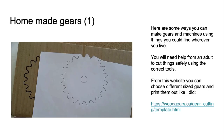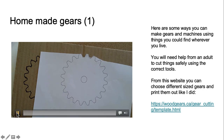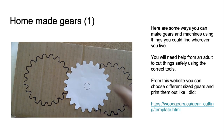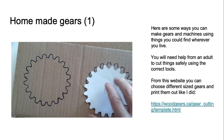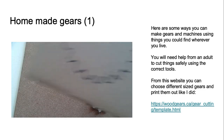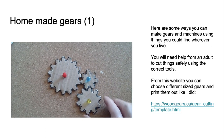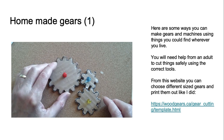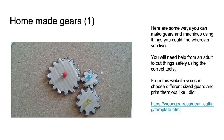Homemade gears number one. Here are some ways you can make gears and machines using things you could find wherever you live — you will need help from an adult to cut things safely. From a website you can choose different size gears and print them out, cut them out carefully, trace them onto thicker card, and cut the card out to make gears of different sizes. Pin them to a cork board and if you're really careful you can see them turn just like on a plastic gear kit. That's a great challenge — I hope you try it.